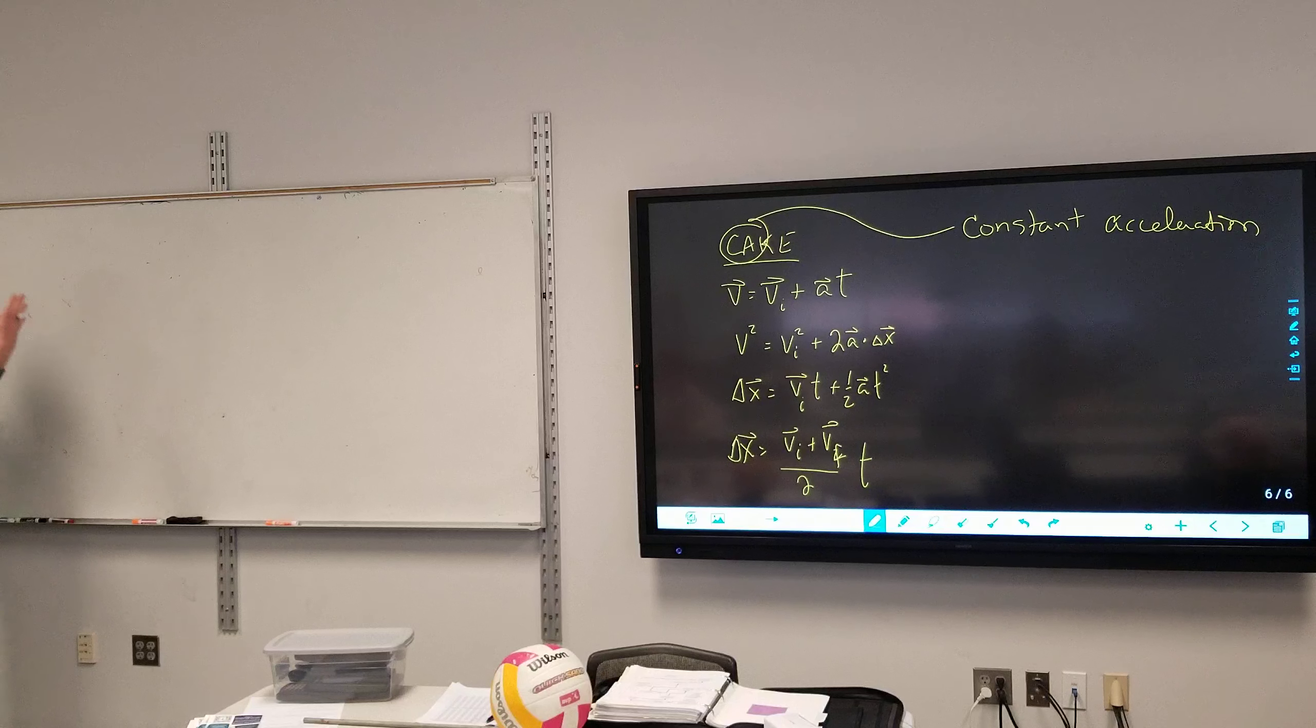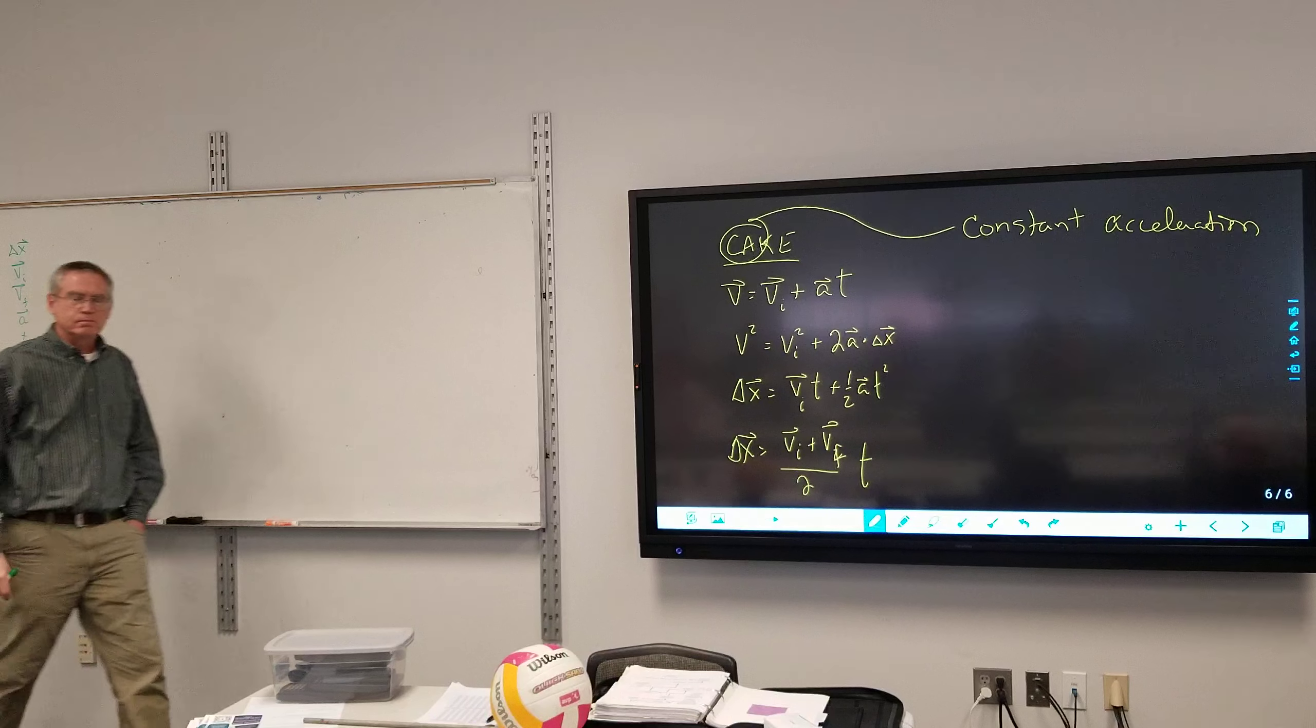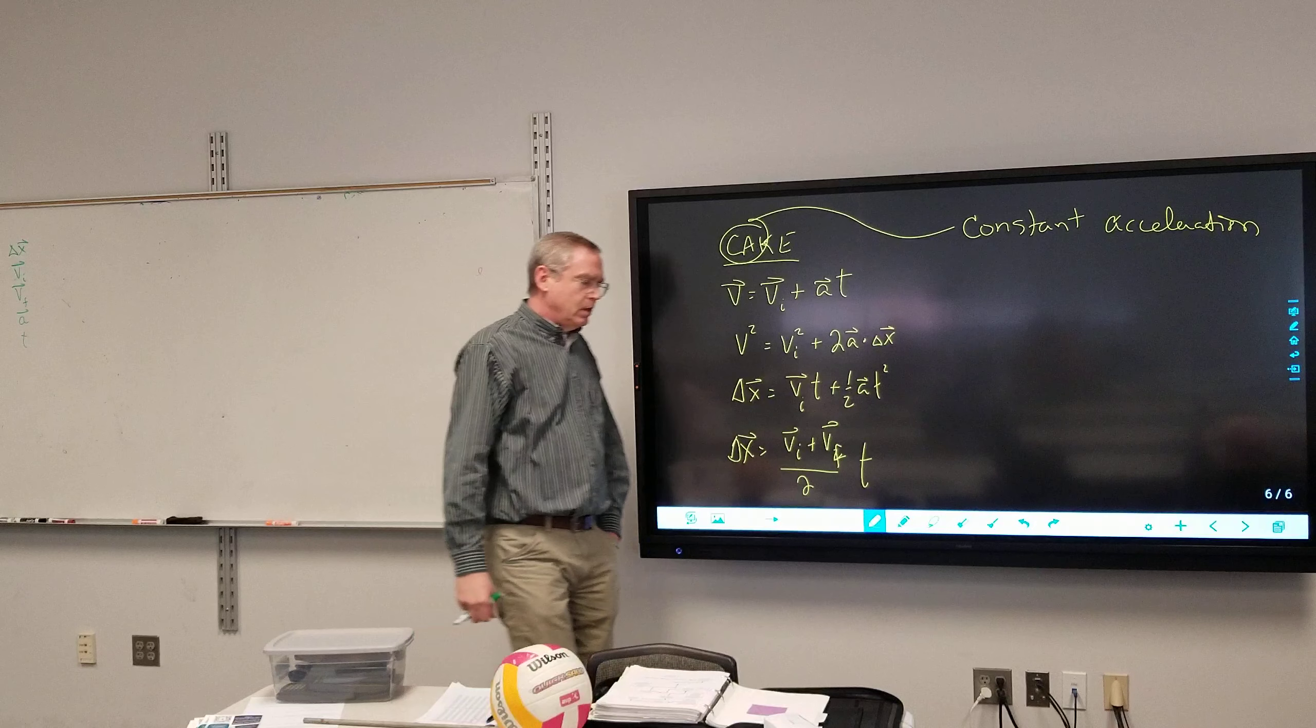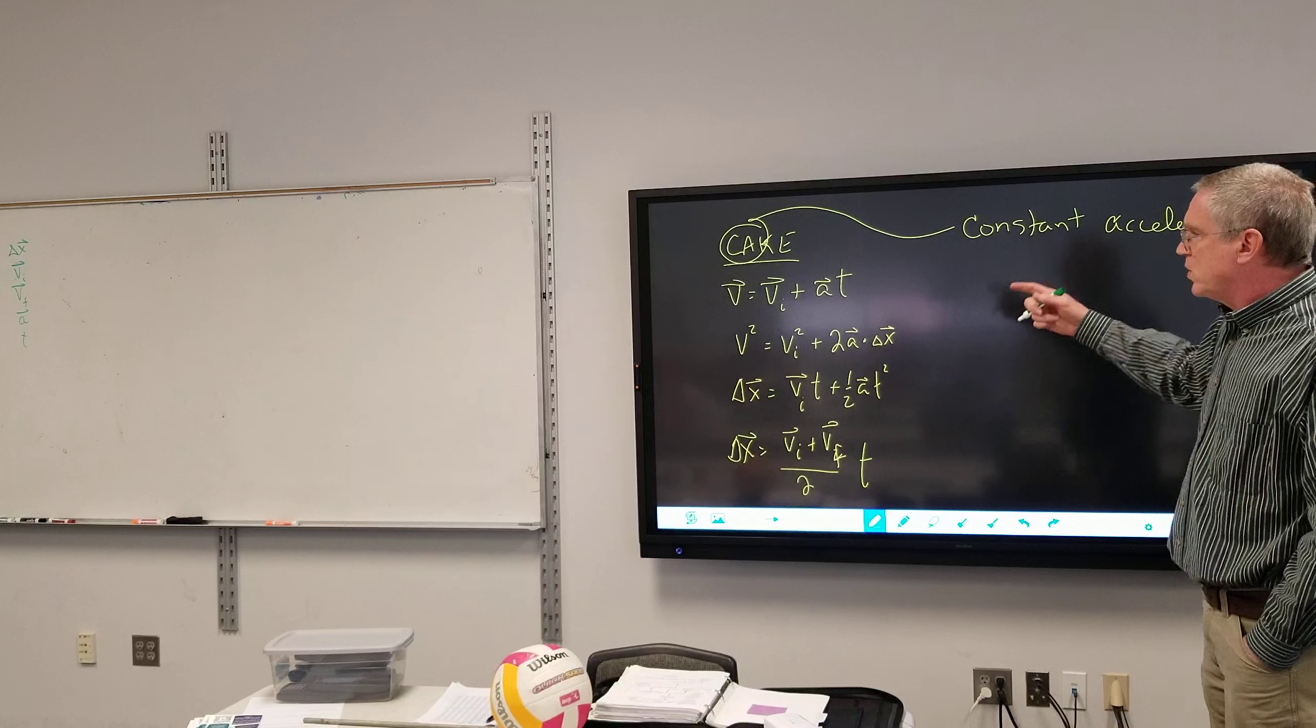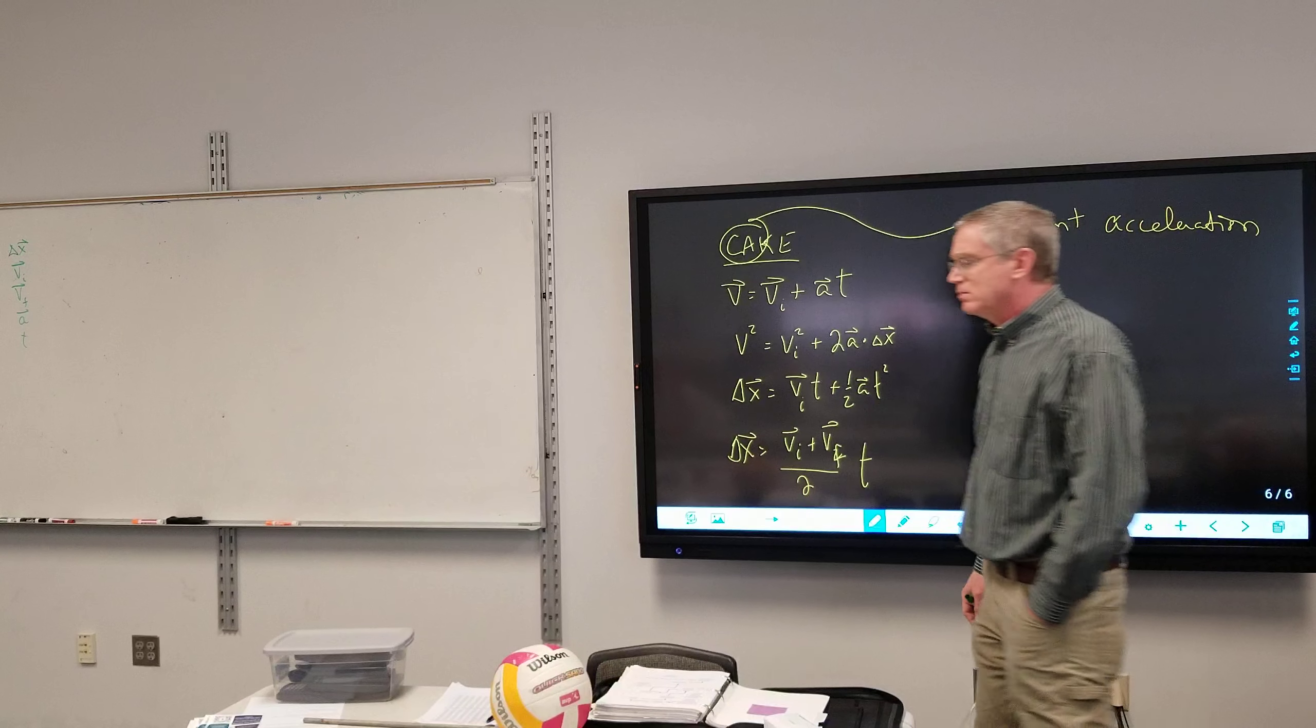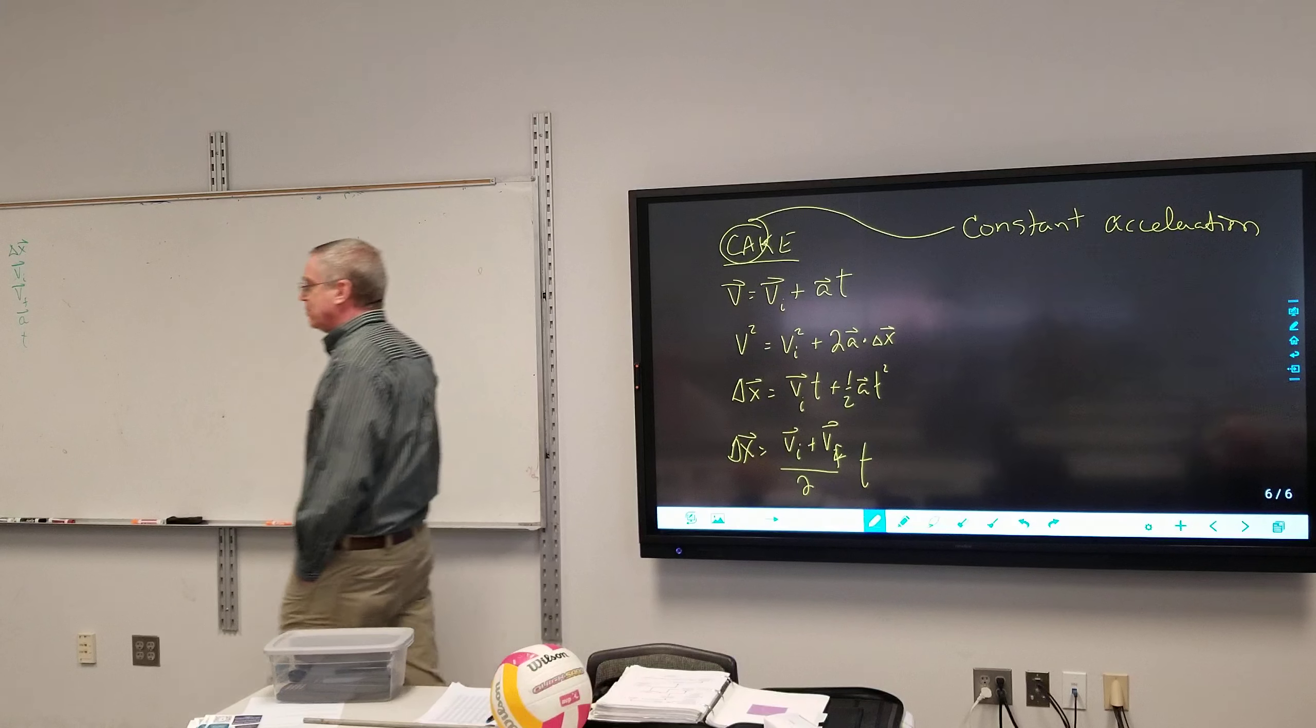So, notice I have five quantities over there. I have displacement, acceleration, let me do it in my traditional order, initial velocity, final velocity, acceleration, and time. One of the issues that some students in the past have found is, not sure which equation to use, there's the scatter approach, and then work it out from there.